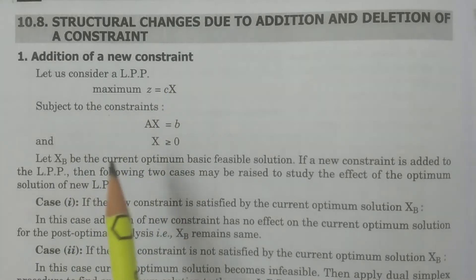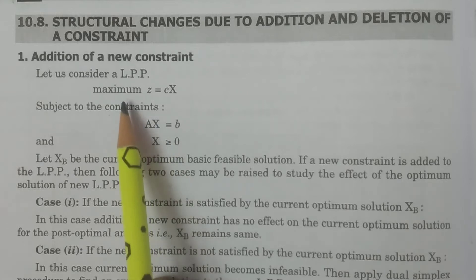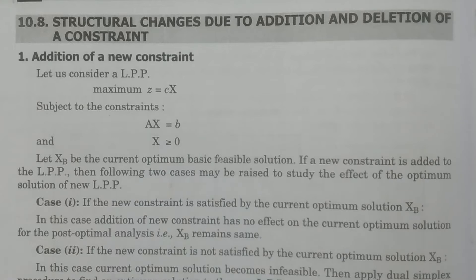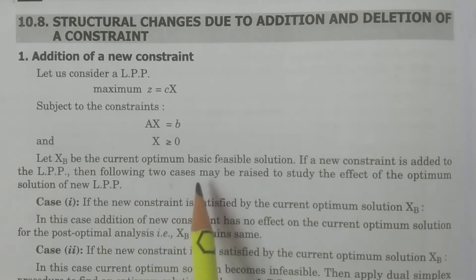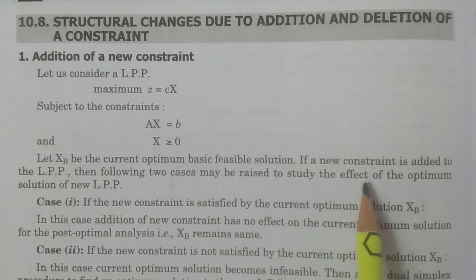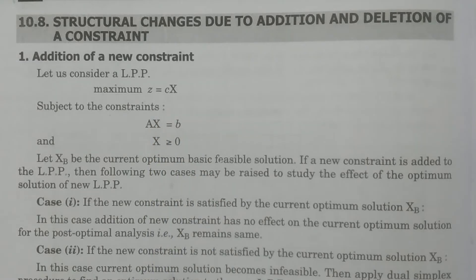Let us consider the linear programming problem in the matrix form: maximize z equal to cx, subject to the constraints ax equal to b, and x greater than or equal to 0, in which xb is the optimum basic feasible solution. If a new constraint is added to this LPP, then we have to study two cases that may arise.